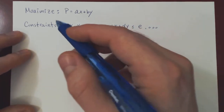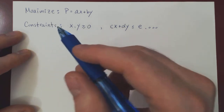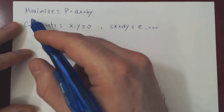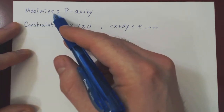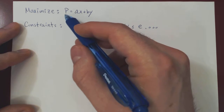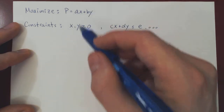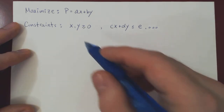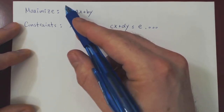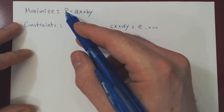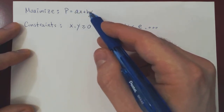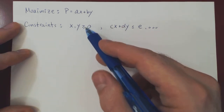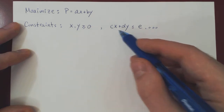In this video, we will briefly introduce the idea of linear optimization in the case of two variables. Here's the problem: we want to maximize the following function. p is called the objective function. a, b, c, d, and e are fixed real constants. Our goal is to maximize the function p given by ax plus by, subject to the following constraints: both x and y must be non-negative, and we may have additional constraints of this type.